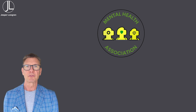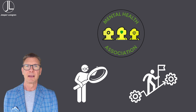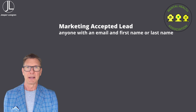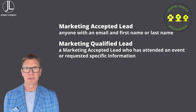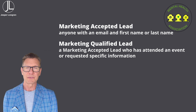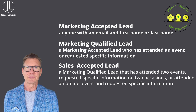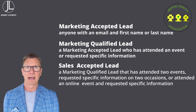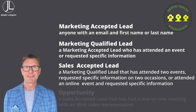Going forward, MHA wants more granularity and has redesigned the sales and marketing process to follow best practice. This has led to the introduction of four types of leads: a marketing accepted lead, defined as an individual with a valid email address and a valid first or last name; a marketing qualified lead, which is a marketing accepted lead who has attended an event or requested specific information; and a sales accepted lead, which is a marketing qualified lead that has attended two events, requested specific information on two occasions, or attended an online event and requested specific information.